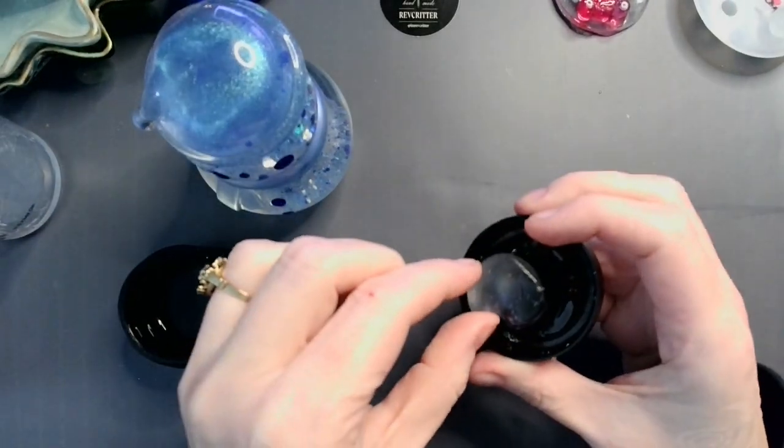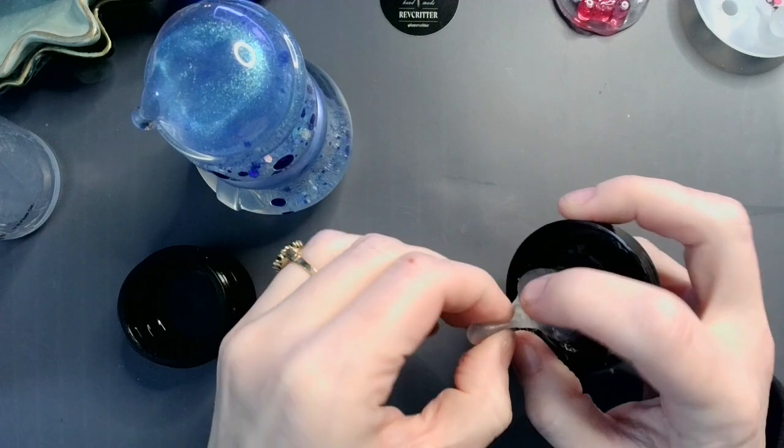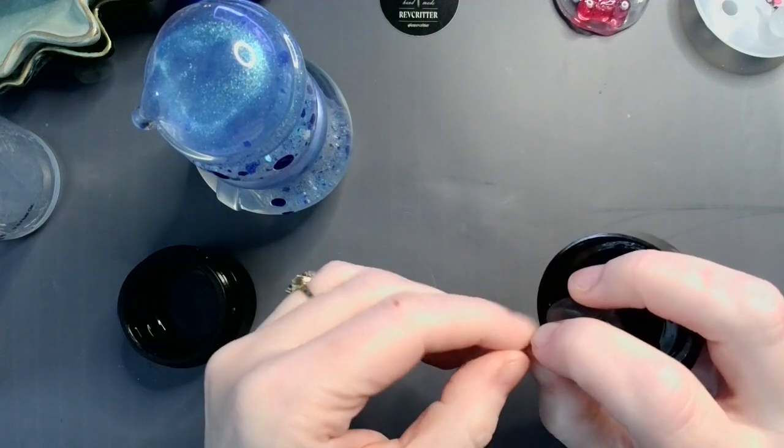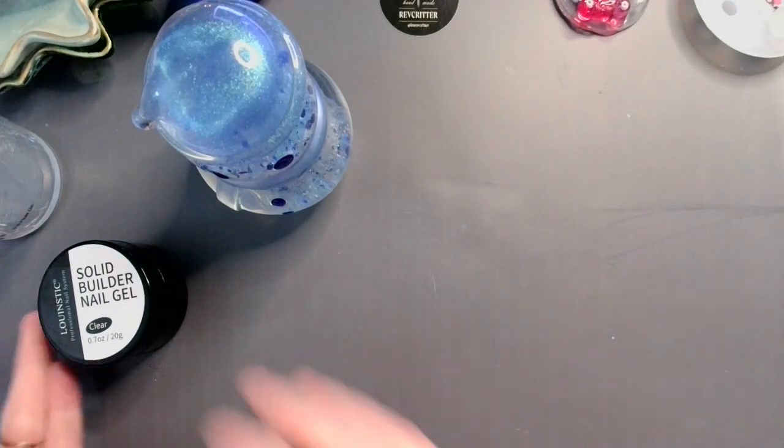And links for this stuff are in the description box. Got it from Amazon. Comes with three colors. Clear, white, and pink. Applicable tools of application. And, yeah, it works really well. And each of these little pots is 20 grams.